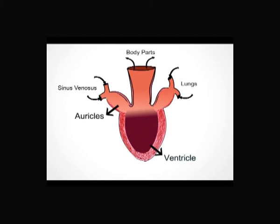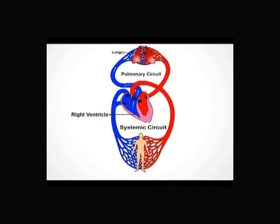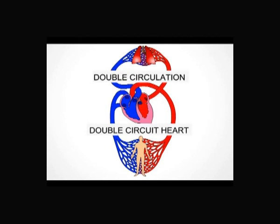The ventricle contracts and pumps blood into a large artery called the aorta, distributing mixed blood to all parts of the body including the lungs. The heart that pumps blood to the lungs for oxygenation is called a pulmonary heart. In frogs and higher animals, blood passes through the heart twice — once between the heart and lungs, and again from the heart to the body — making it double circulation, and the heart is called a double circuit heart.